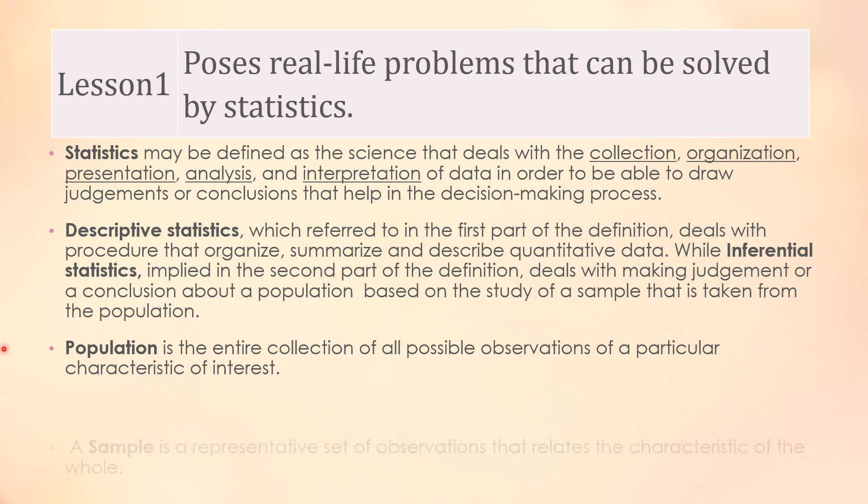Population is the entire collection of all the possible observations of a particular characteristic of interest. The sample is a representative set of observations that relates the characteristics of the whole. Population is the large group, for example all people that are included in your study, and sample is only part of that population.